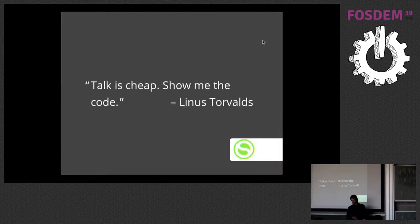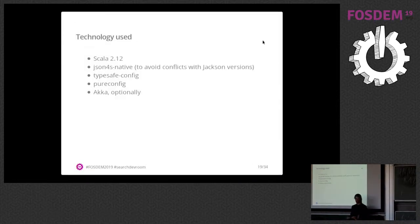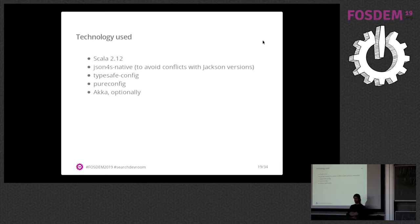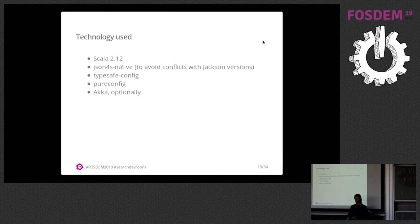How did we implement this? We used Scala as a technology because it's easier to do functional programming with it, despite Java's functionality in recent versions. When we needed to parse JSON, we used JSON4S native because we did not want conflicts with any Elasticsearch libraries, so that our code was mostly independent on the JVM classpath compared with Elasticsearch. We used config libraries already implemented for Scala so that we can take a case class and directly plug information from a YAML or TOML file into the case class.